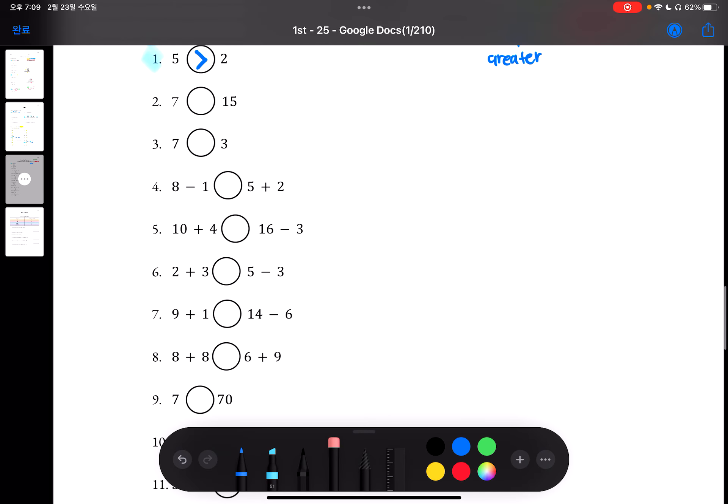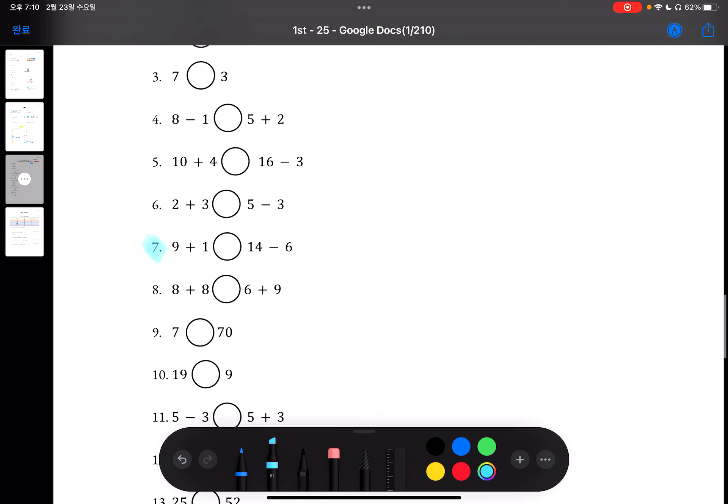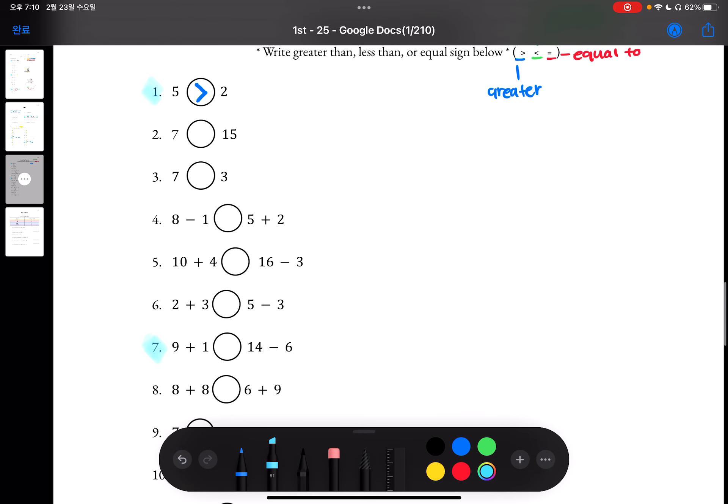Let's look at another one. Number 4 through 8, these are the same type of problem. It's just that you have to do one step before actually comparing the numbers.